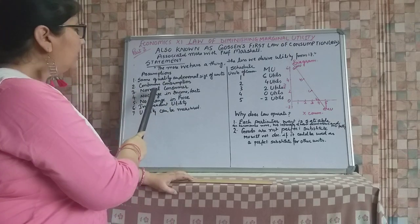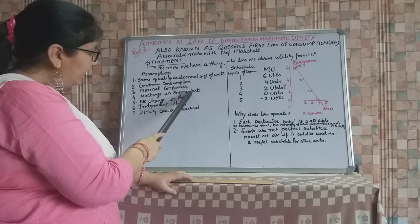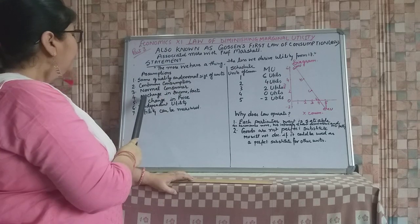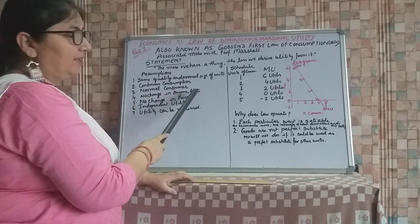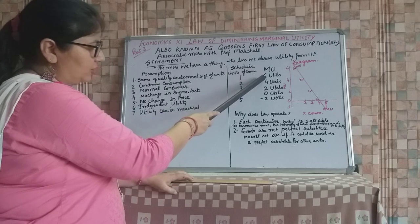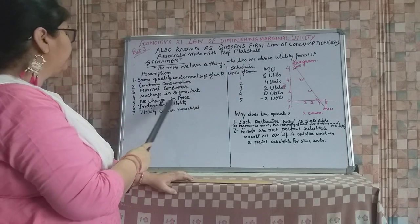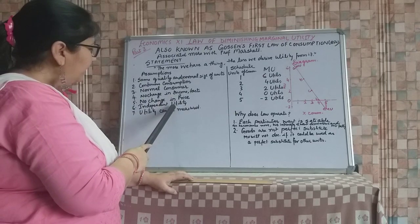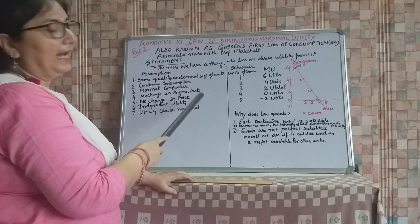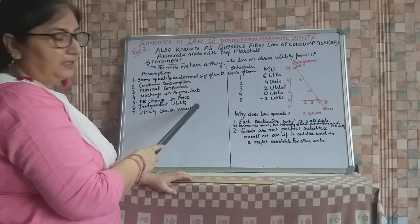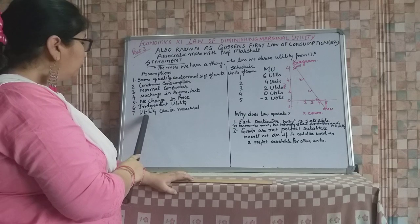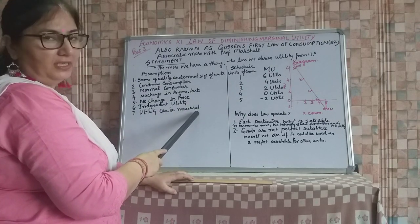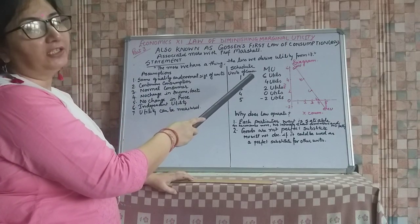Then you are a normal consumer means you know how to get maximum satisfaction by consuming a commodity. Then no change in income and taste because if it changes the ratio of this MU will also diminish. Then independent utility means every commodity has its own utility and it is not concerned with the use of another one. Utility can be measured. Here we are measuring it and for measuring the utility we use the word utils not units.